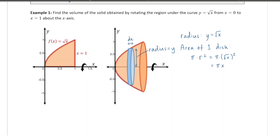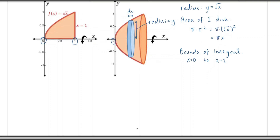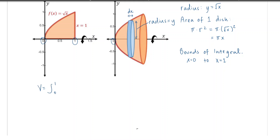The bounds of the integral go from 0 to 1, so we're adding up all these disks from x = 0 to x = 1. The volume is the integral from 0 to 1 of π times x dx. We can take out π as a constant, take the anti-derivative, bump the power up and divide by the power, and evaluate from 0 to 1. We get π/2. Always leave answers as exact values, so we'll leave it as π/2.